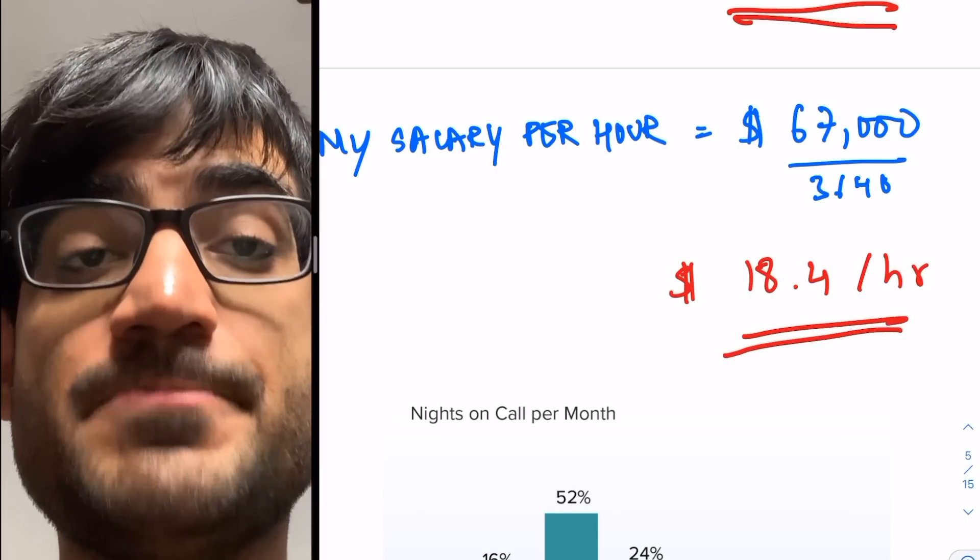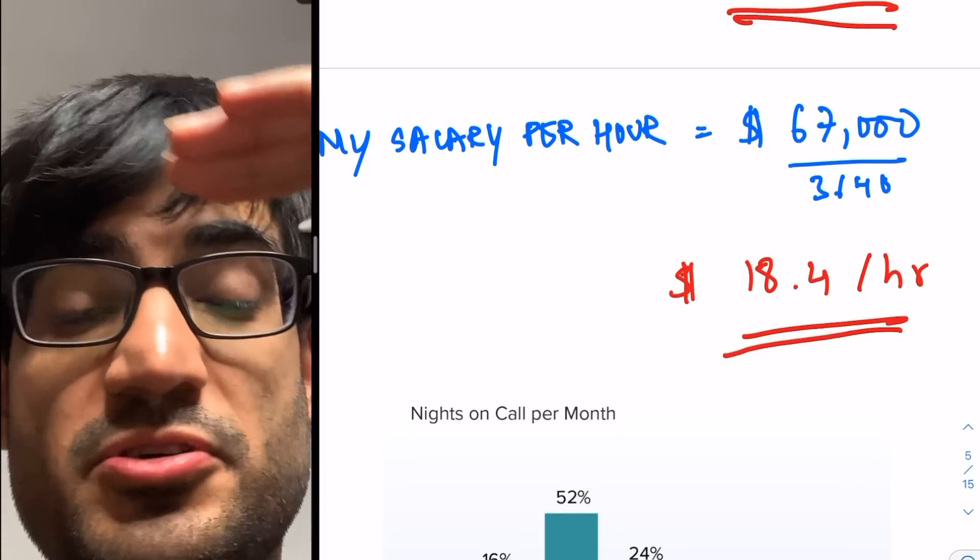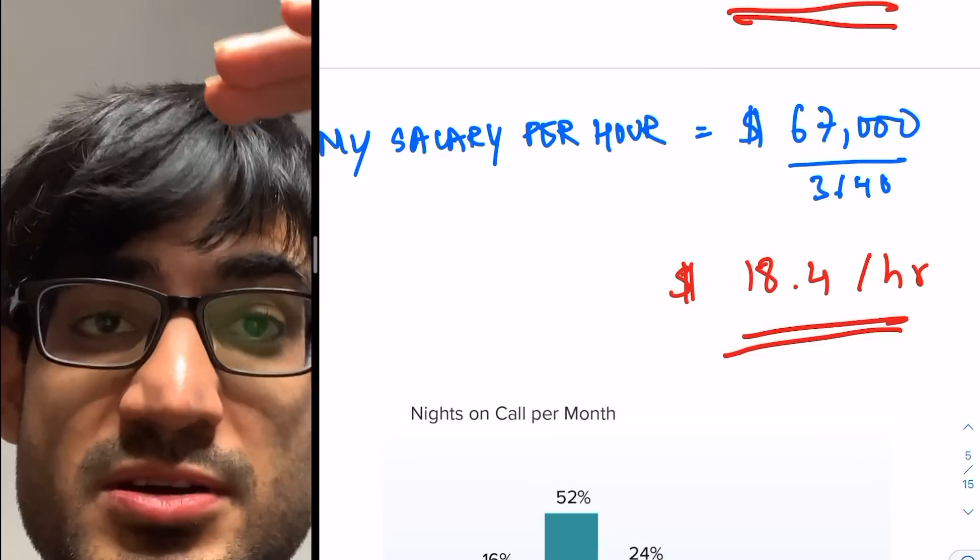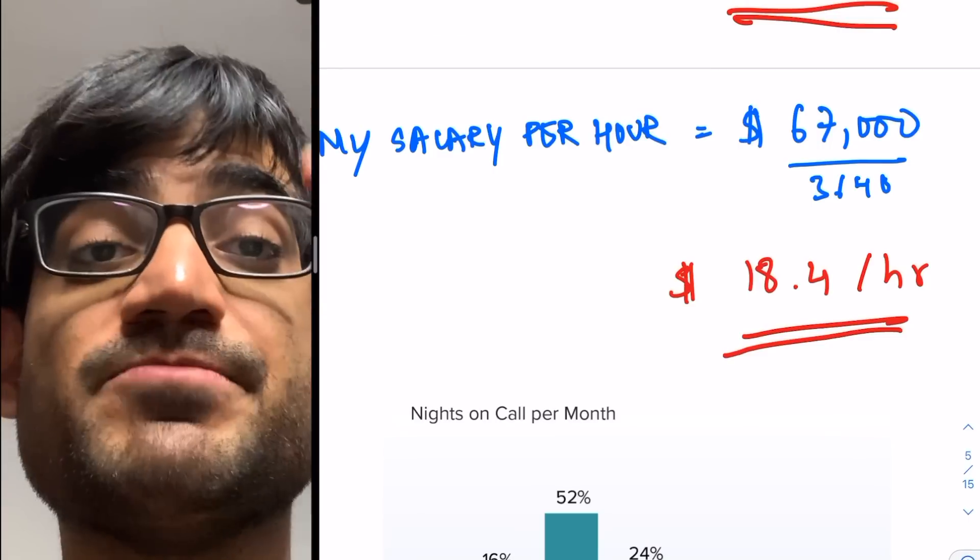Something else to consider here is as you go to the last year of your residency, for example, in IIM, that would be the third year. For me, I'm going to psych. That would be the fourth year. What you can also do is you can become the chief resident.